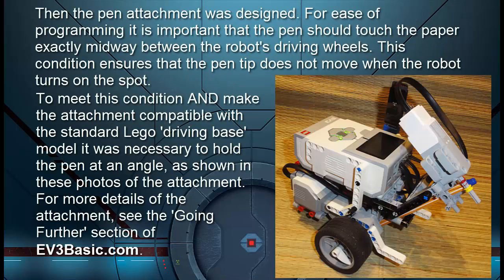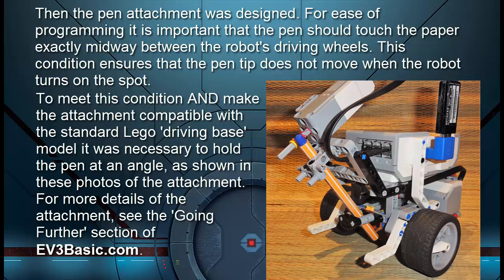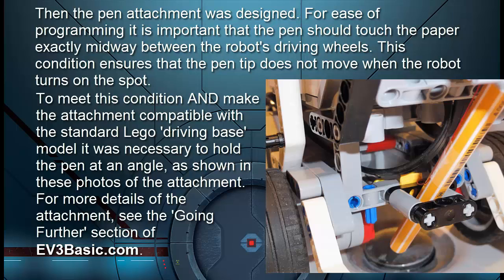Then the pen attachment was designed. For ease of programming, it's important that the pen should touch the paper exactly midway between the robot's driving wheels. This condition ensures that the pen tip does not move when the robot turns on the spot. To meet this condition and make the attachment compatible with the standard LEGO Driving Base model, it was necessary to hold the pen at an angle, as shown in these photos of the attachment. For more details of the attachment, see the Going Further section of ev3basic.com.